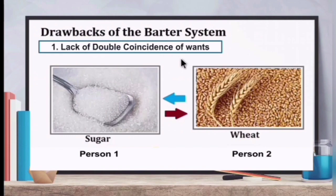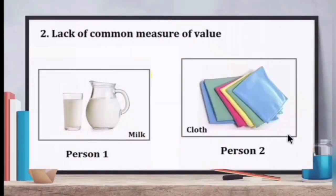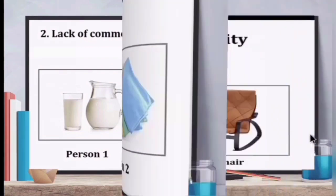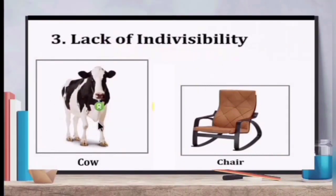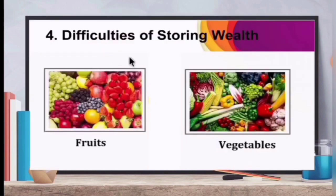The second drawback is lack of a common measure of value — for example, exchanging milk for cloth with no standard measurement. The third is lack of indivisibility — for example, a cow cannot be divided to equal the value of a chair. The fourth is difficulty of storing wealth — fruits and vegetables exchanged cannot be stored for long as they will spoil.